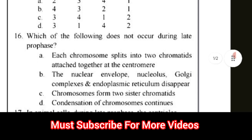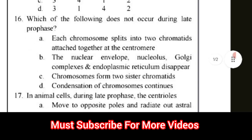Question number 16: Which of the following does not occur during late prophase? We have to identify which statement is not associated with late prophase. Statements include: each chromosome splits into two chromatids attached at the centromere; nuclear envelope, Golgi complexes and endoplasmic reticulum disappear; chromosomes form two sister chromatids; condensation of chromosomes continues. The correct answer for question number 16 is option C.